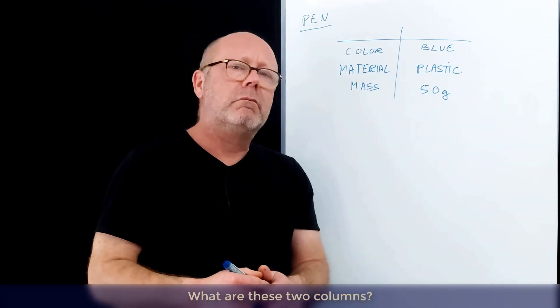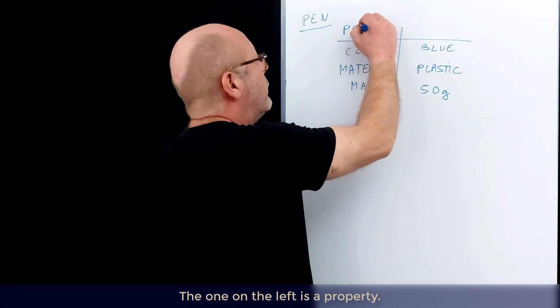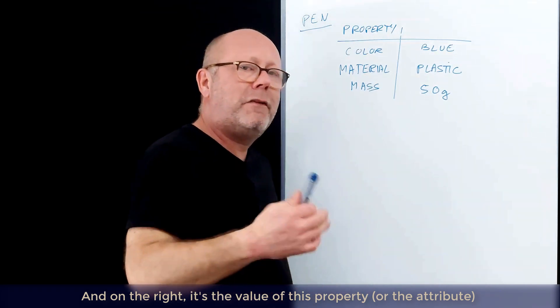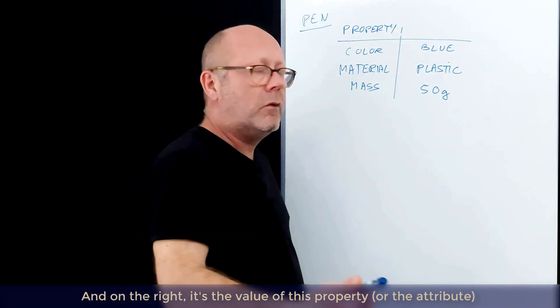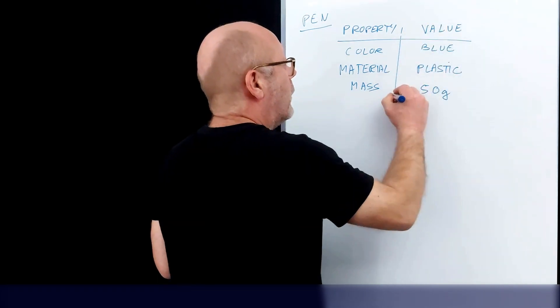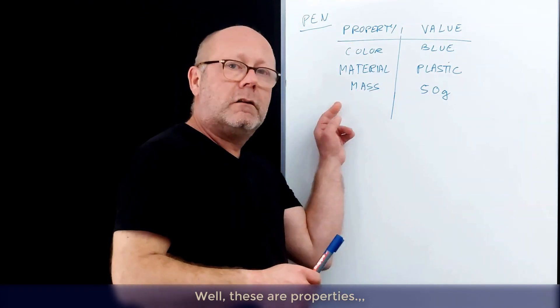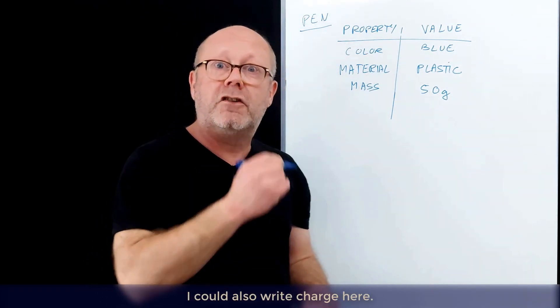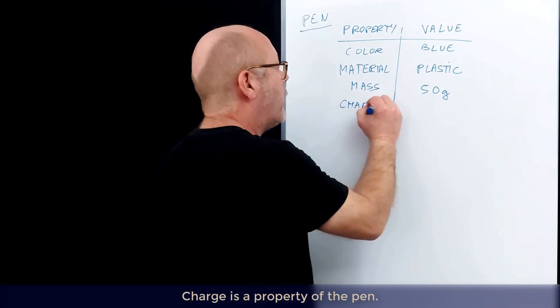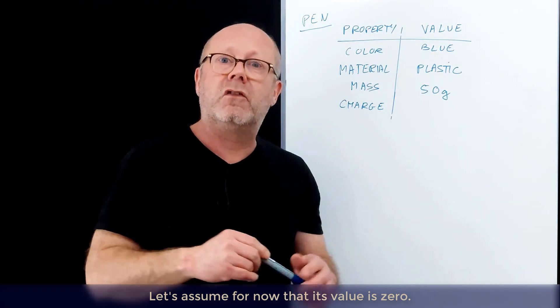What are these two columns? The one on the left is a property, and on the right is a value of this property, or the attribute. Let's call it value. These are properties. I could also write charge here. Charge is a property of the pen. Let's assume that its value is, for now, zero.